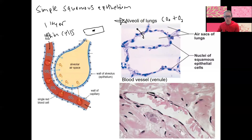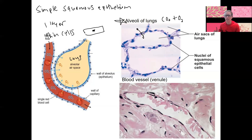Here's a visual showing gases having to go from the air sacs of the lungs to the blood vessels — capillaries in this case. We have four membranes to cross, but we're minimizing that distance by having this tissue type. We don't want layers; we don't want cuboidal cells. That's an example of structure-function relationship for simple squamous.